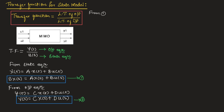From equation 1, we can write S·X(S) − A·X(S) = B·U(S), by sending that term to the left-hand side. We can rewrite the above equation as (S·I)·X(S) − A·X(S) = B·U(S), where I represents the identity matrix.